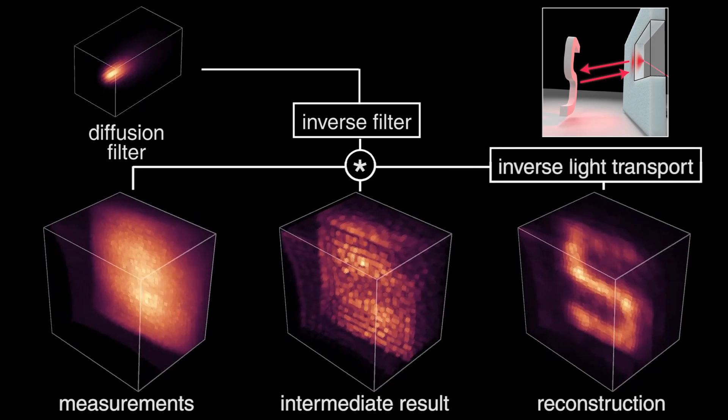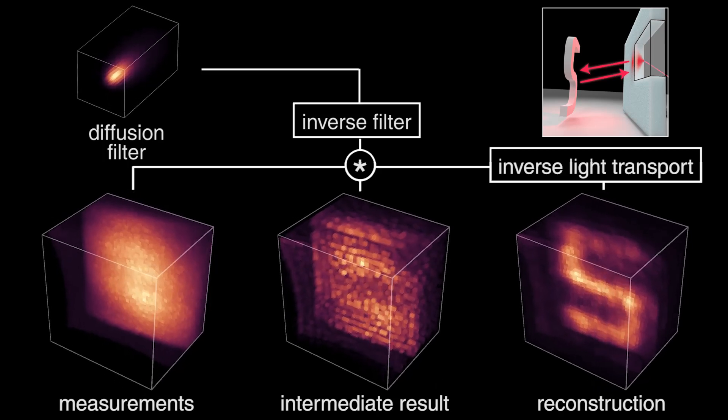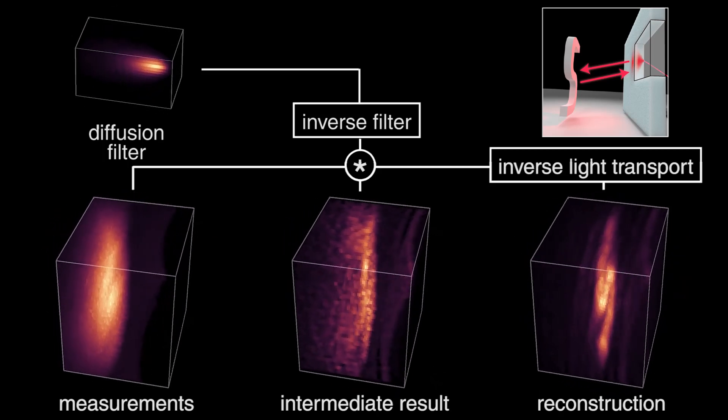Finally, we use an efficient Fourier domain technique to invert the corresponding light transport model and recover the hidden volume.